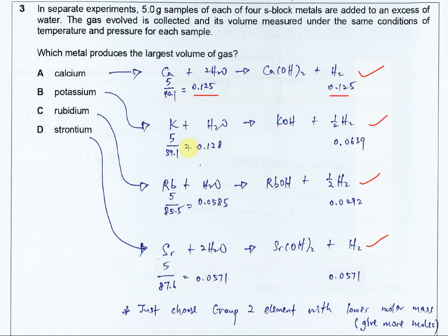For potassium, you get 0.128 because the hydrogen mole is halved. Therefore, you just get 0.0639.